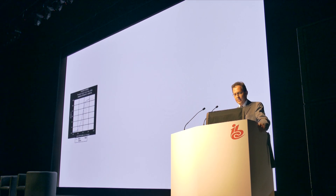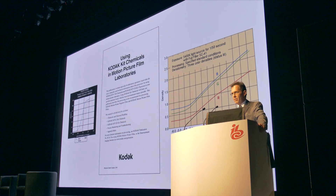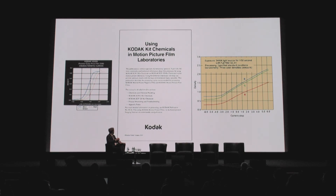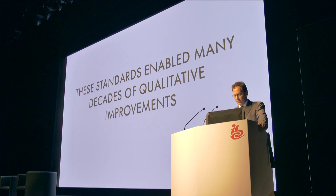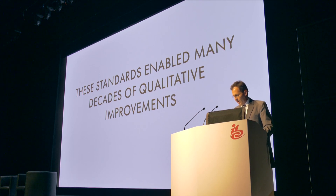Here are a few visual aids: spectral response curves for Kodak film and Fujifilm, and also the recipe for the soup in which to develop this film — all very well documented. You could argue there are variations at the various film labs, but they'd all be organized around a baseline. The film manufacturers played a key role in standardizing our infrastructure. These standards enabled many decades of qualitative improvements across the entire motion picture industry — color, widescreen, multi-channel sound, and incremental improvements in lenses, film stocks, projection, and sound. You would not have seen these sorts of systematic improvements without standardized infrastructure.